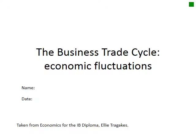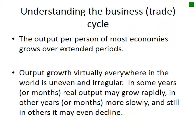Today we're looking at the business trade cycle, which encompasses economic fluctuations. The output per person of most economies grows over an extended period. GDP and GDP per person increase as we get more efficient and have technological advances, so we see this increase of output per person typically over time.